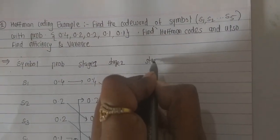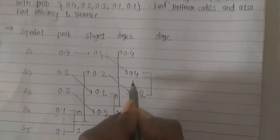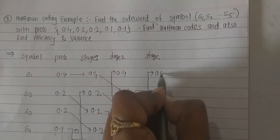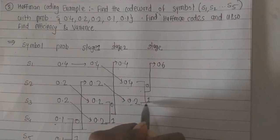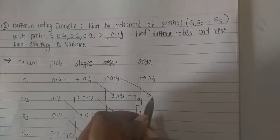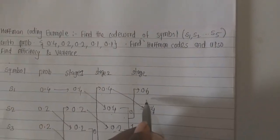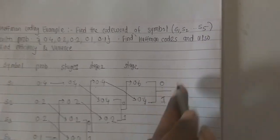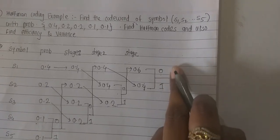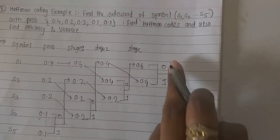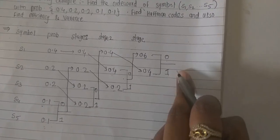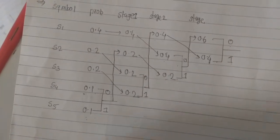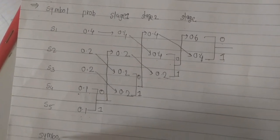In stage 3, combine 0.4 plus 0.2, which equals 0.6. Place it at the highest priority and assign symbols 0 and 1. The two 0.4 values are placed at their respective positions with 0 and 1 assigned. After this, we do not combine further since we have reached a single combined probability, so we stop here.